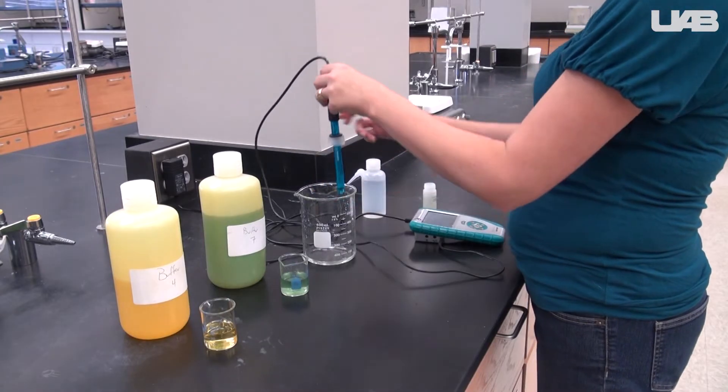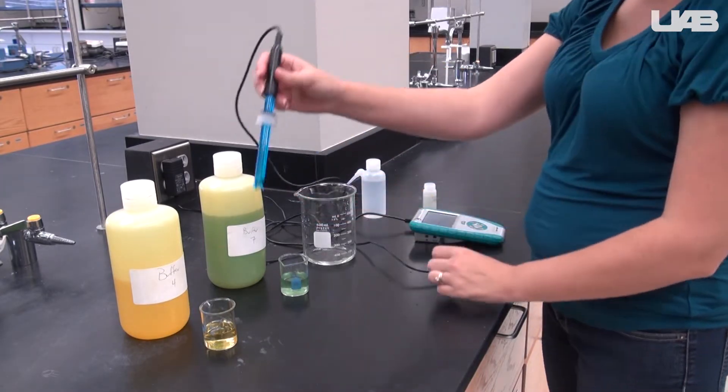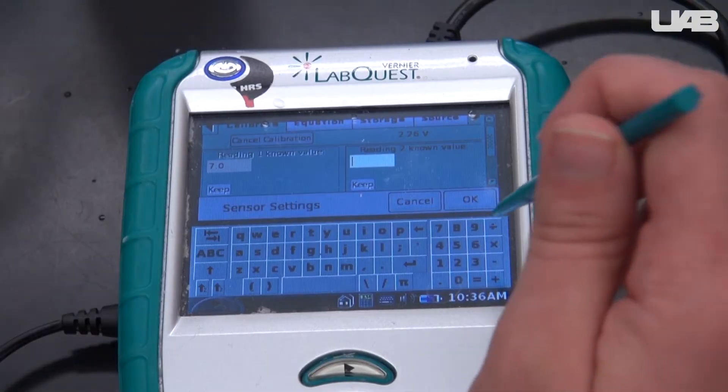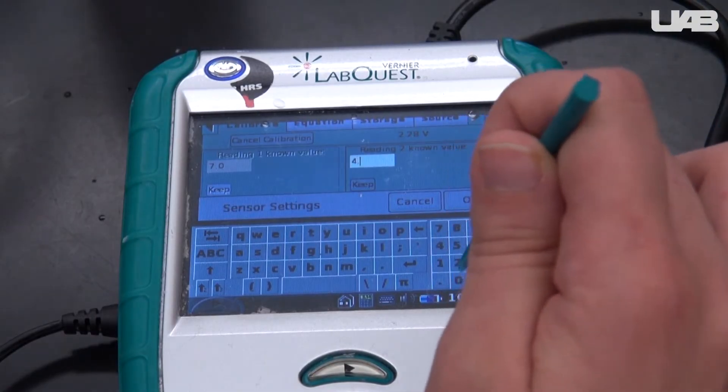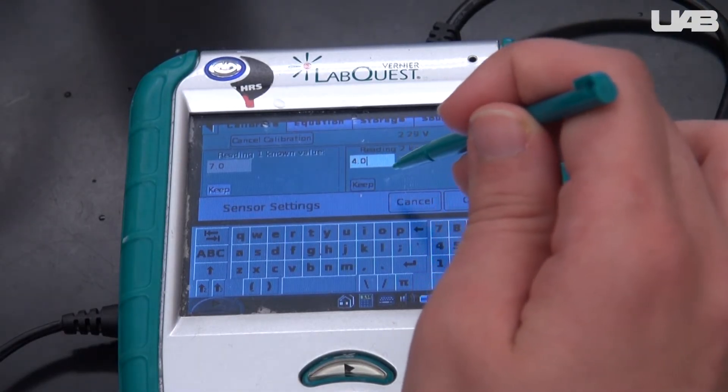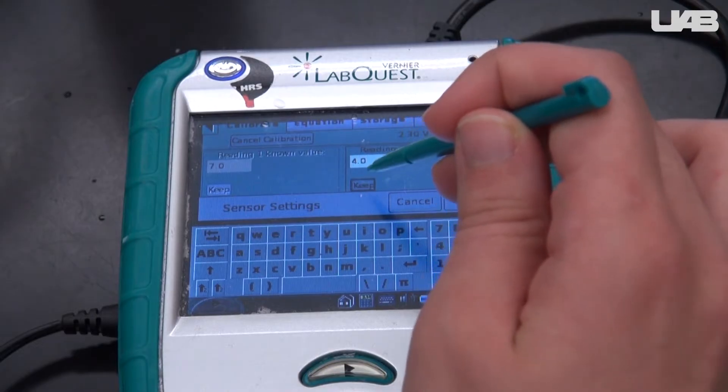Then rinse the probe off with the wash bottle and place it into the pH 4 buffer. Once the voltage stabilizes, enter 4.0 into the space and select Keep, then press OK.